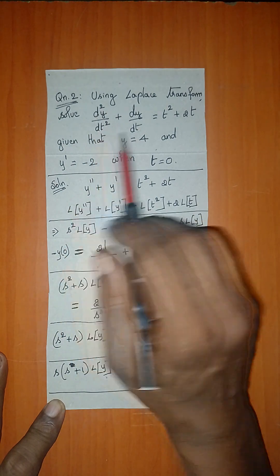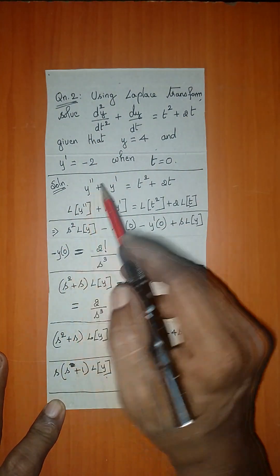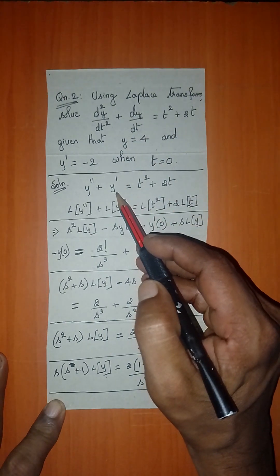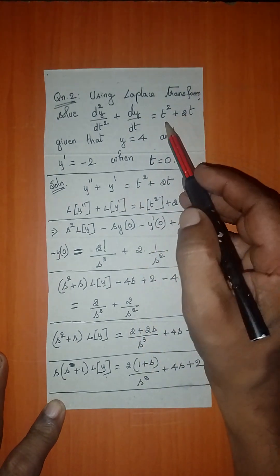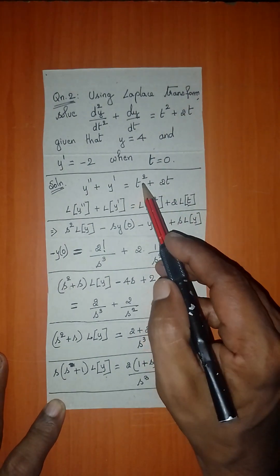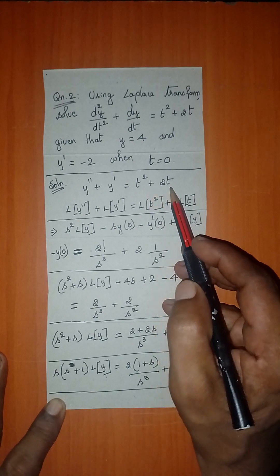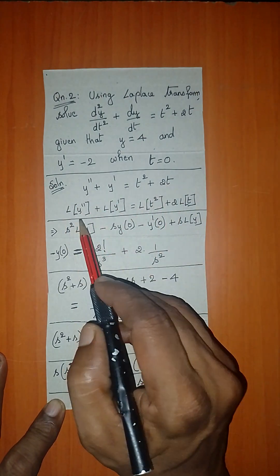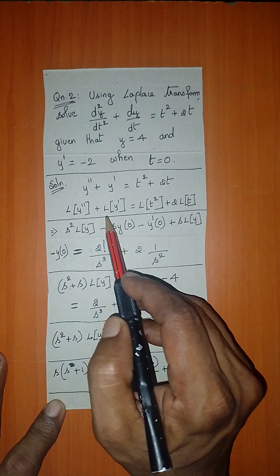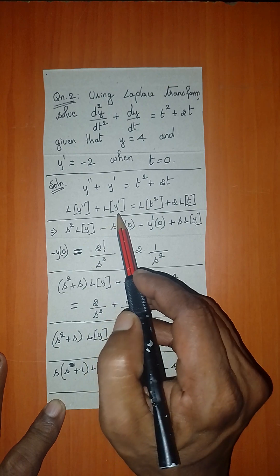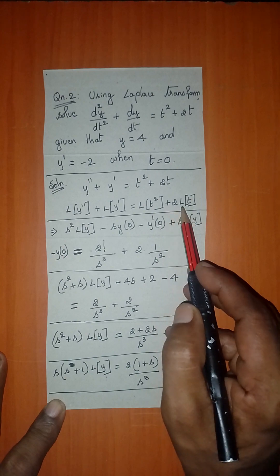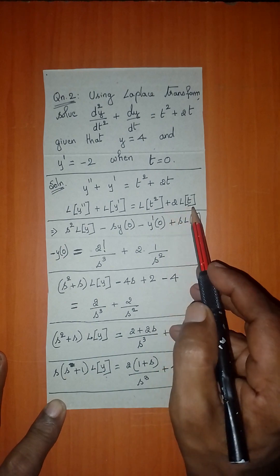d²y/dt² can be written as y double dash, and dy/dt can be written as y dash. The right hand side is t² + 2t. Now taking Laplace transform on both sides: Laplace transform of y double dash plus Laplace transform of y dash equals Laplace transform of t² plus 2 into Laplace transform of t.